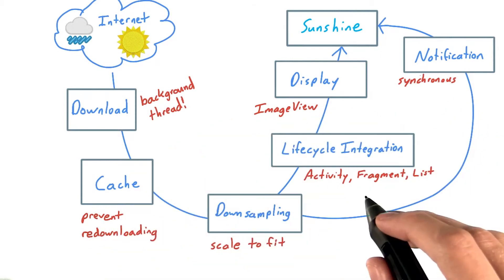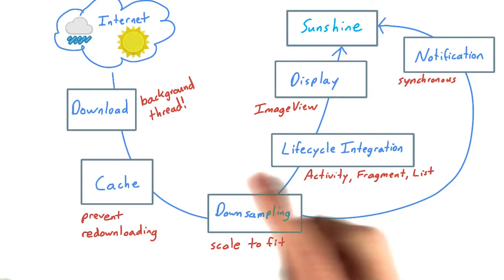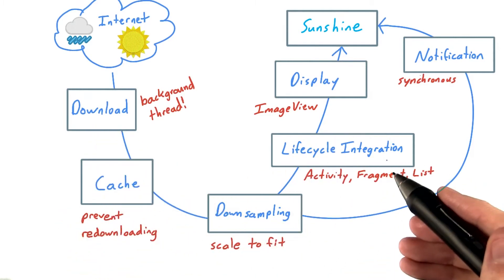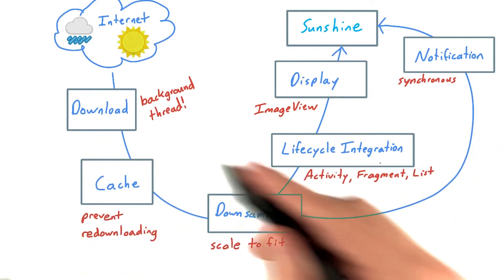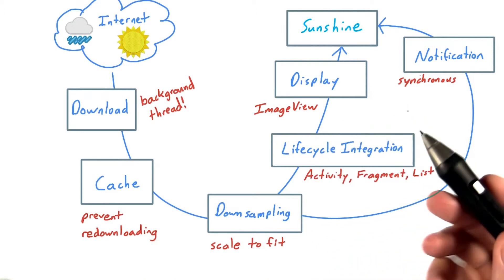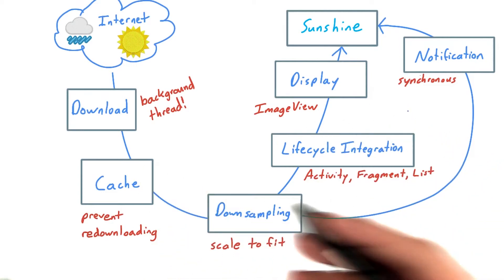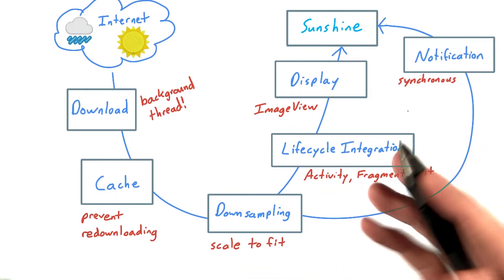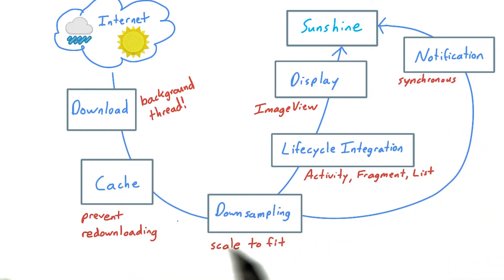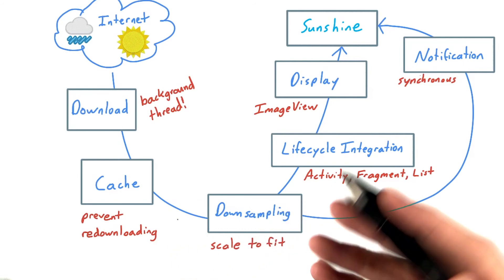Anyone else thinking this is a bit complicated? We can't just cut out any of these steps if we want a good experience. But none of the logic here is unique to Sunshine, right? Plenty of other apps have gone through the same flow and tackle these same steps. When you see these types of reusable pieces of code, it's a great time to consider using a library.